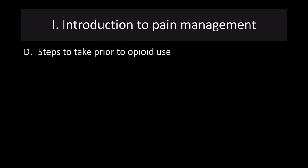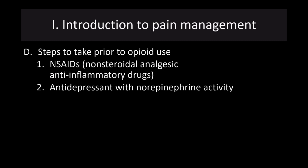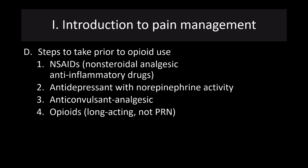Here are some steps to take prior to opioid use. First, try a non-steroidal anti-inflammatory. Possibly try an antidepressant with norepinephrine reuptake activity, or some anticonvulsant analgesics. Long-acting opioids may be a choice, particularly for an inpatient — not a PRN drug like Lortab. A longer-acting opioid would be more appropriate in that context. Starting with NSAIDs is a good place to begin.